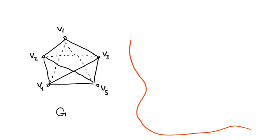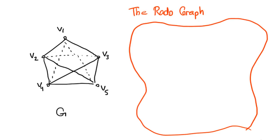Can you find the exact same copy of G inside the Rado graph? The answer is, surprisingly, yes, for any graph G you can imagine.